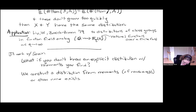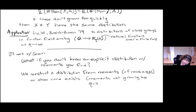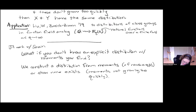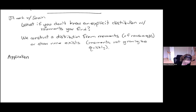This also handles the existence question: given a sequence of moments, does there exist a distribution? Of course if you found the moments from an explicit distribution, you already know the answer. But we construct a distribution from moments in this context of random groups, or show none exists.